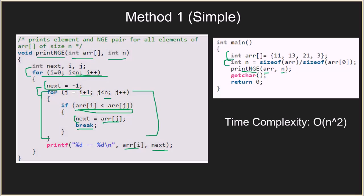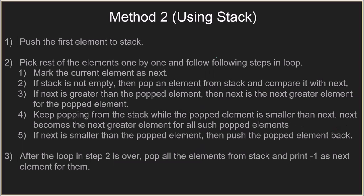The time complexity of this solution is O(n²) because you have a nested loop. For each element you are iterating over the whole array towards its right, so the time complexity is O(n²). Now we will see the second method using stacks, which reduces the time complexity to O(n).